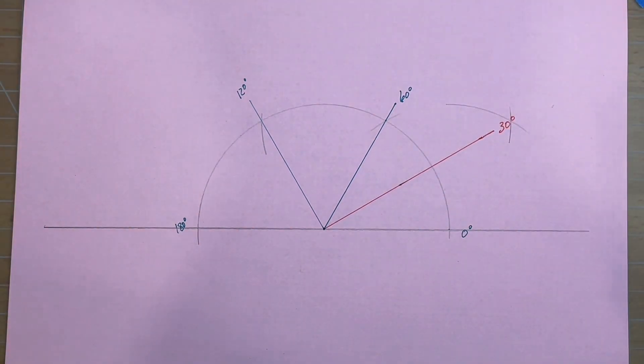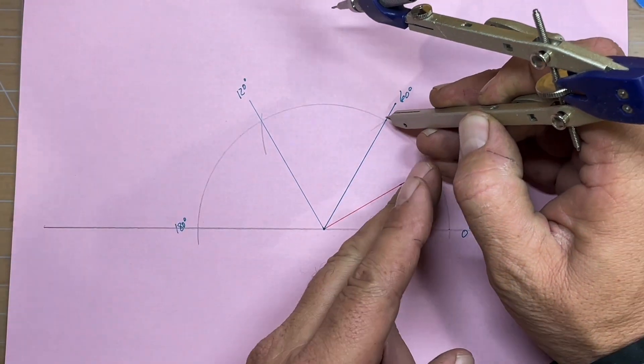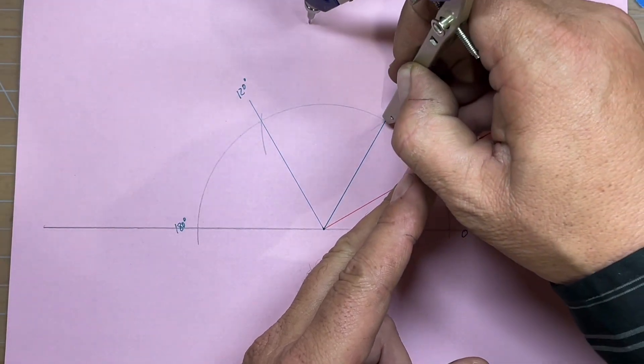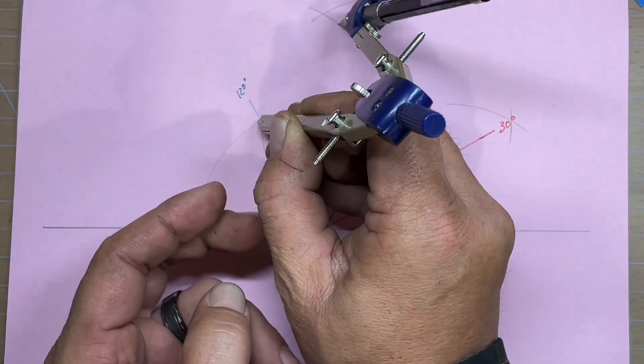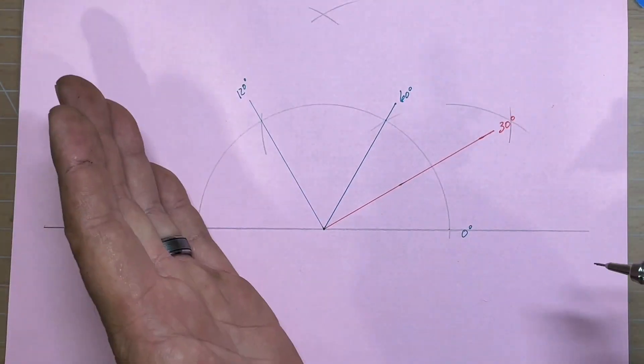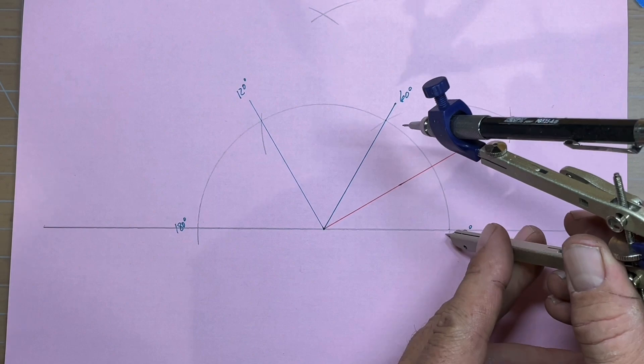Now from here, we can continue to bisect these, or another way that you can do it, which I'll show you momentarily, you can continue to bisect each one of these 60 degree segments, or you can reset your compass.